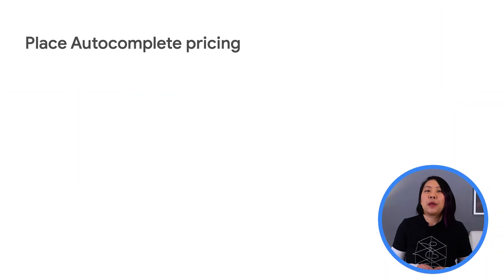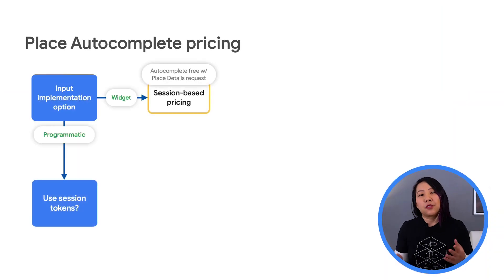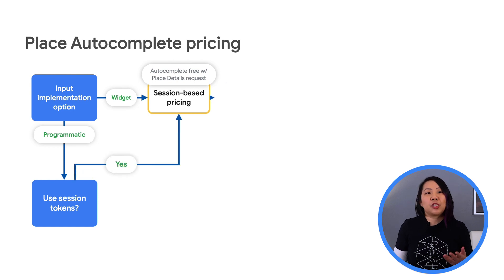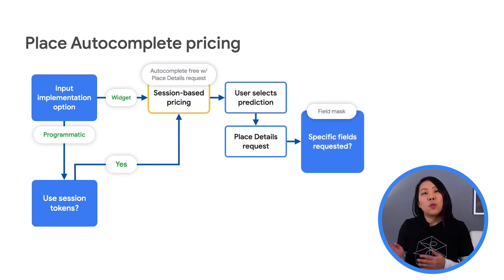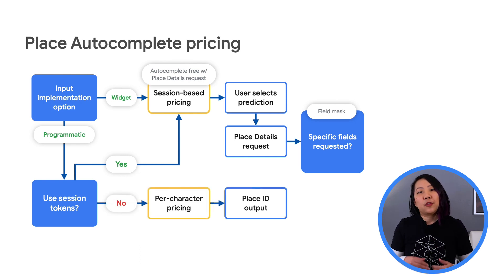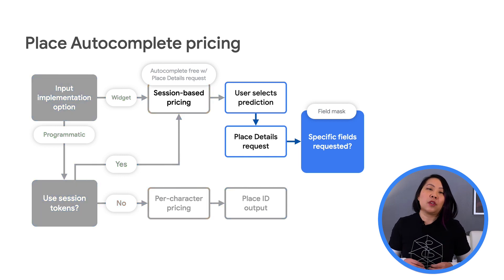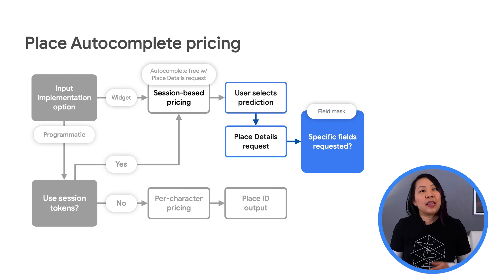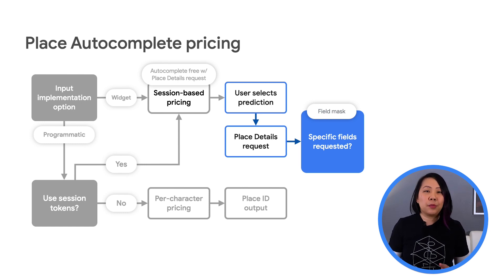Let me start by breaking down the components of Place Autocomplete pricing. Place Autocomplete has two parts: the input when the user types in characters, and the output when the user selects one of the predictions and you retrieve information about the selected place. I'll talk about the input portion in another video, but what you can do with the output can make the biggest difference in your autocomplete costs.